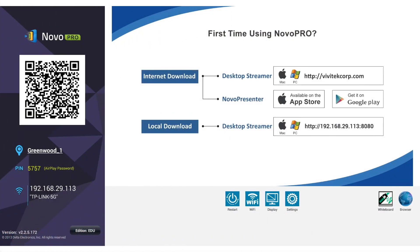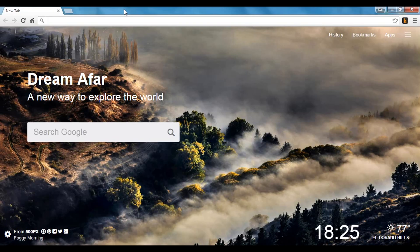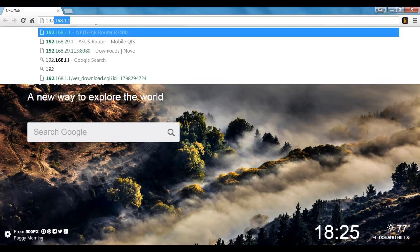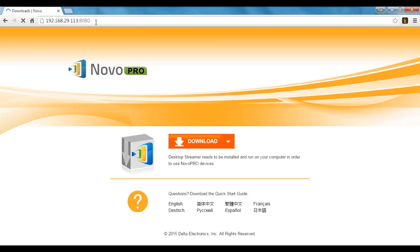Alternatively, Desktop Streamer software for Windows or Mac computers can be downloaded for installation directly from the Novo Pro device itself. Simply access the download address which is shown in one of the default desktop screens on the Novo Pro. You can enter that address into a browser to access a page where you can choose to download the application.